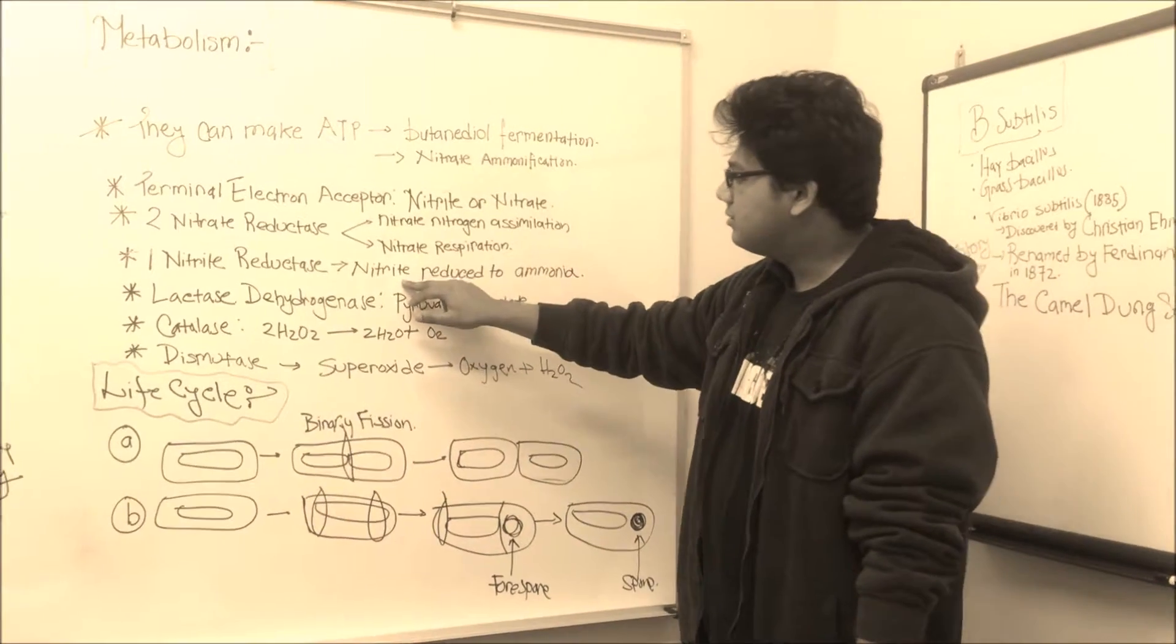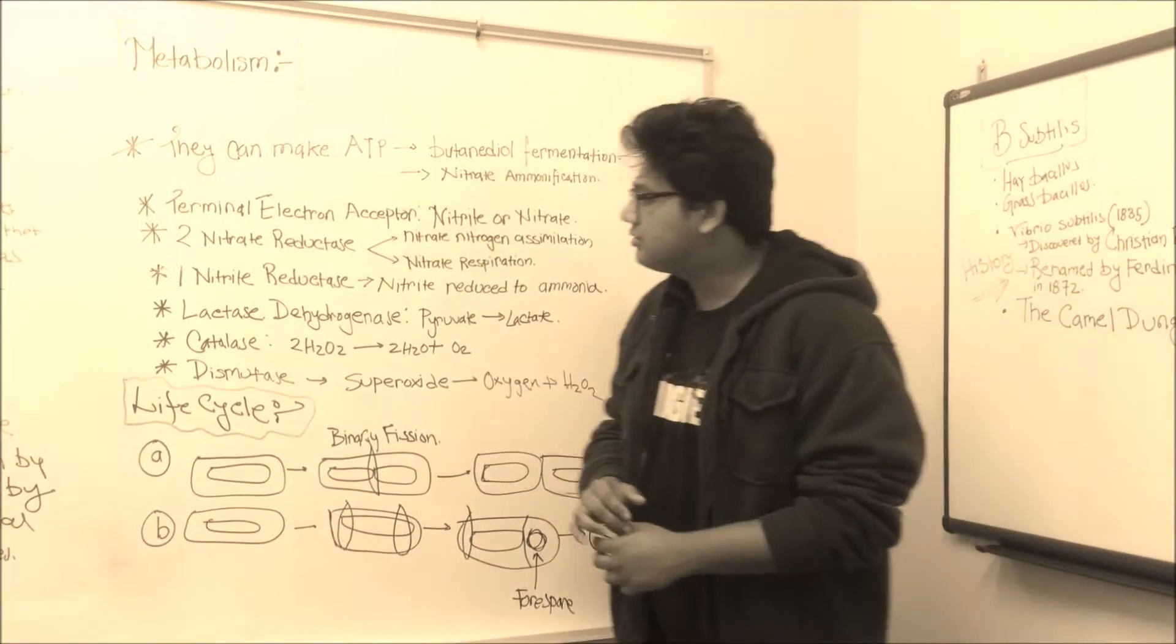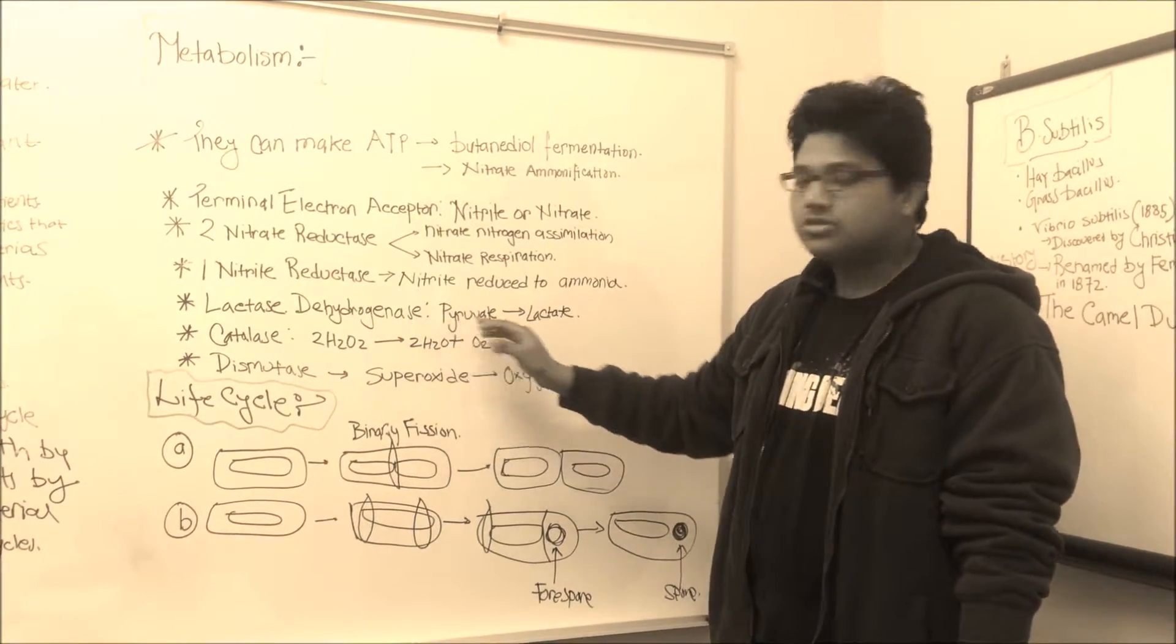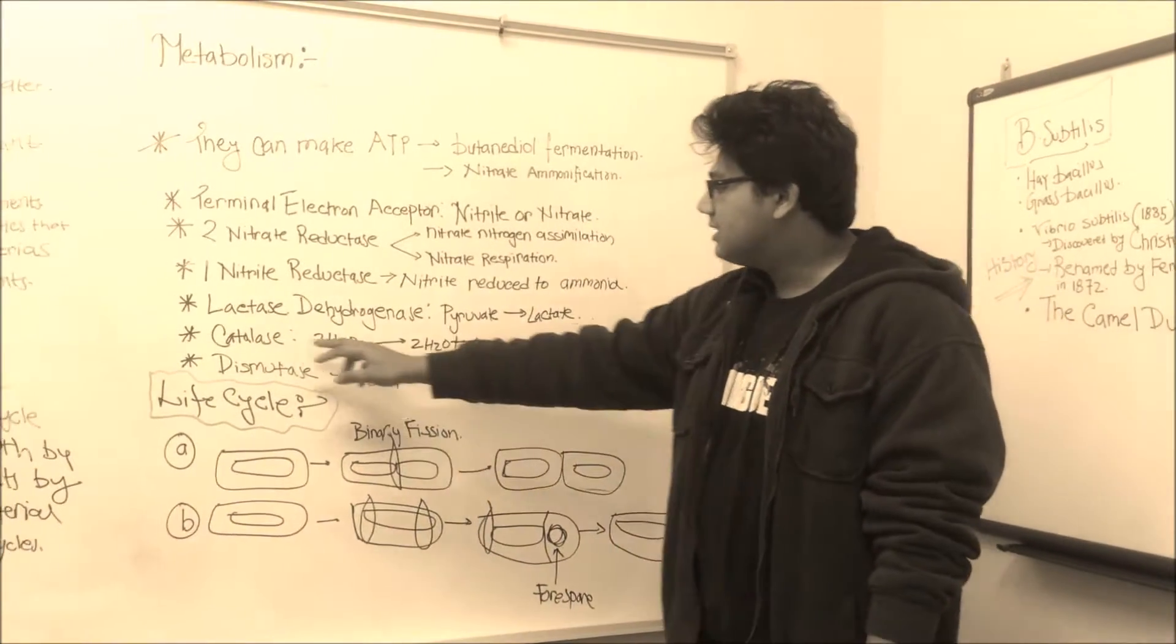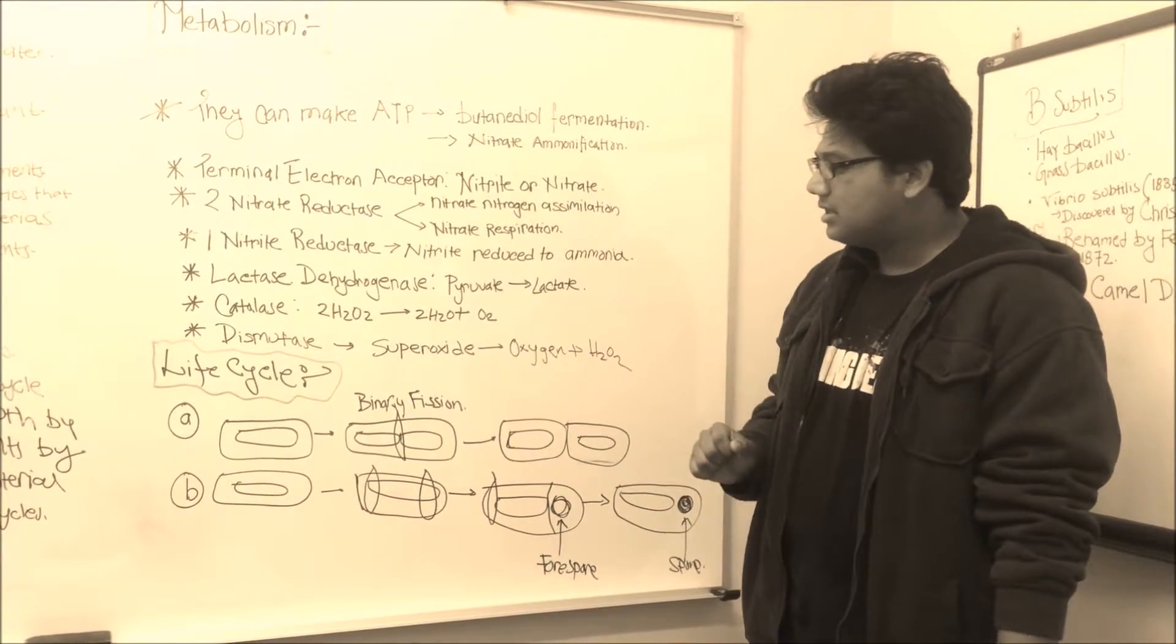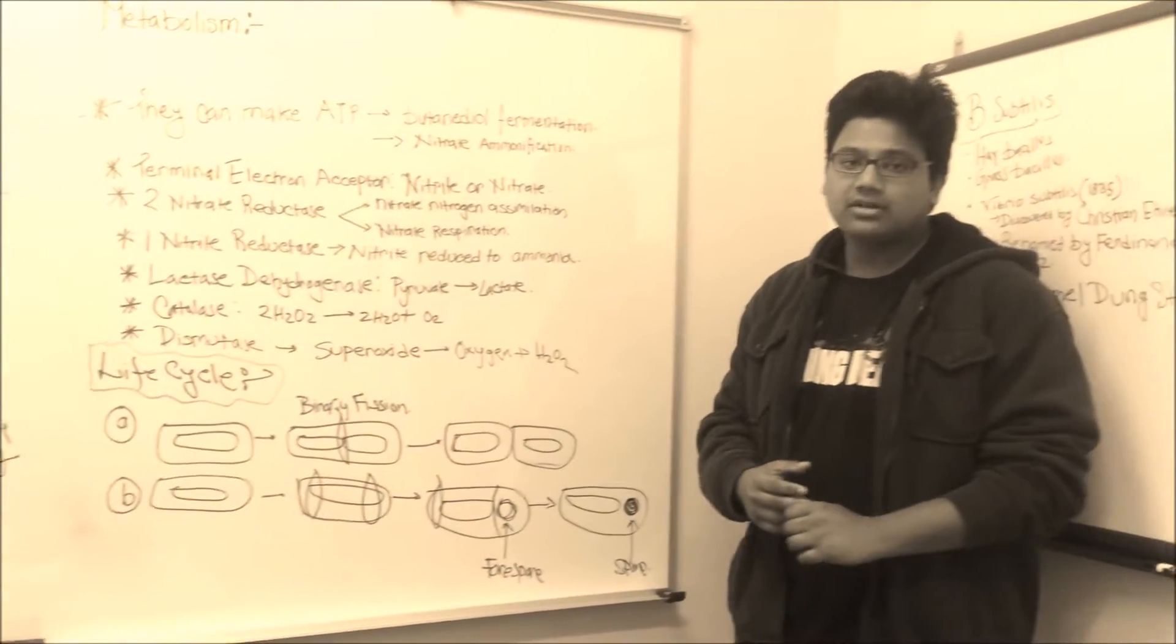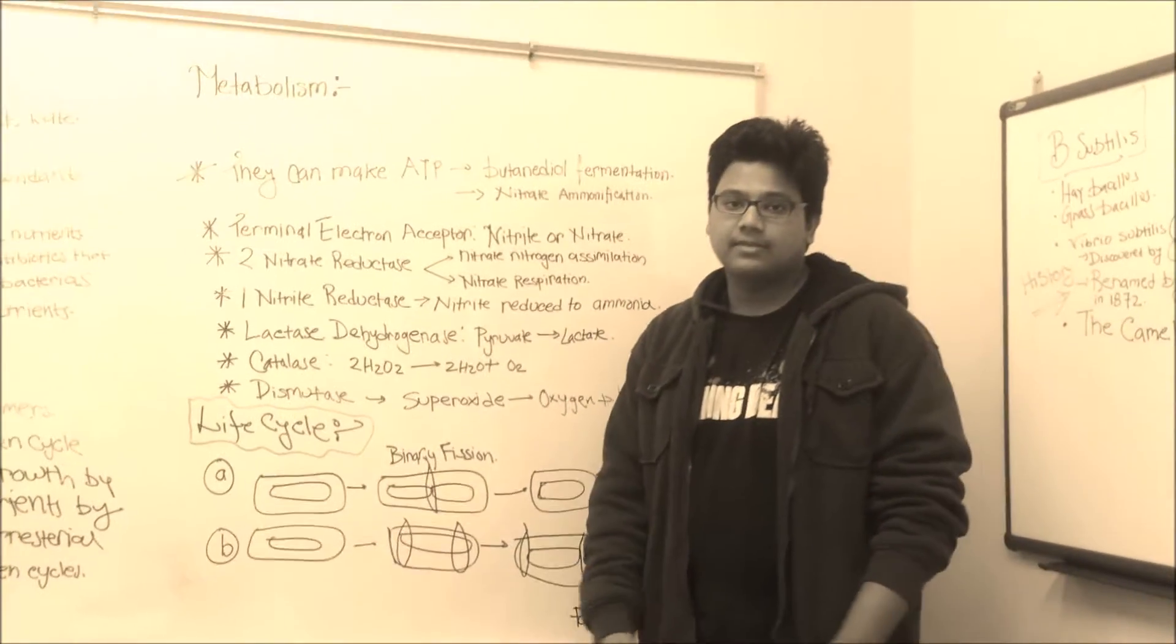This nitrite was derived from the nitrate respiration from the nitrate reductase. They also have lactate dehydrogenase, which converts pyruvate to lactate. They have catalase, which we all know converts peroxide to water and oxygen. They also have dismutase, which converts superoxides into oxygen and peroxide.